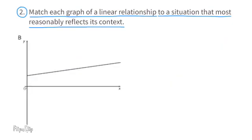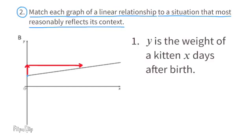Graph B has a positive y-intercept and a positive slope with a positive rise over a positive run. I'll match graph B with situation one: y is the weight of a kitten x days after birth. The y-intercept represents the weight at birth and the slope represents the weight gradually increasing as days go by.